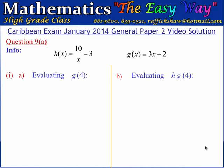We are now at question 9 of this CXC CSEC January 2014 general paper 2 exam video solution. We are starting with question 9a, which is a functions question. We are given two functions: h of x is equal to 10 divided by x minus 3, and g of x is equal to 3x minus 2. Part 1a wants us to evaluate g of 4, and part b wants us to evaluate h of g of 4.